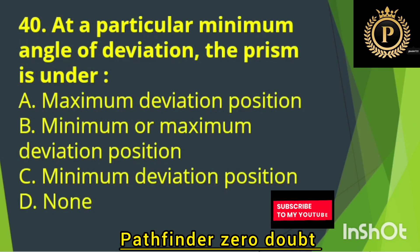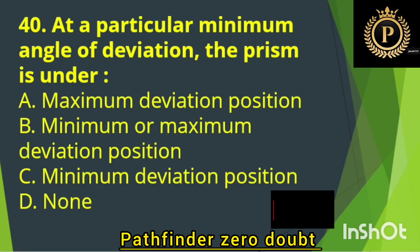At a particular minimum angle of deviation, the prism is under — Option C: Minimum deviation position.